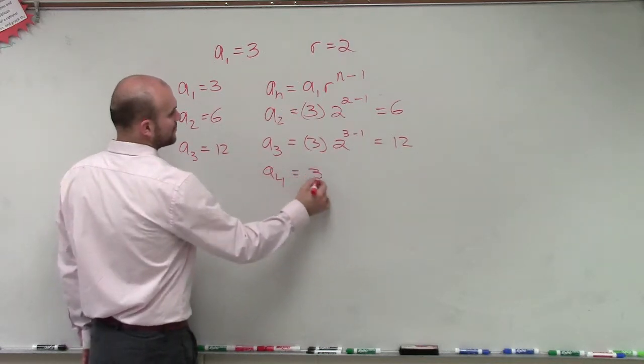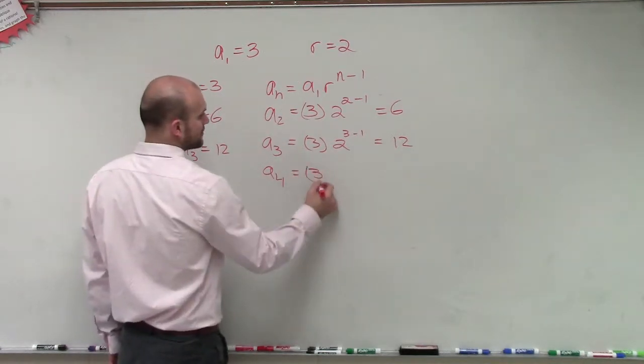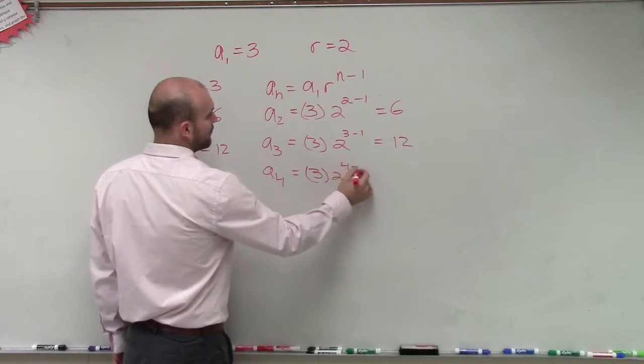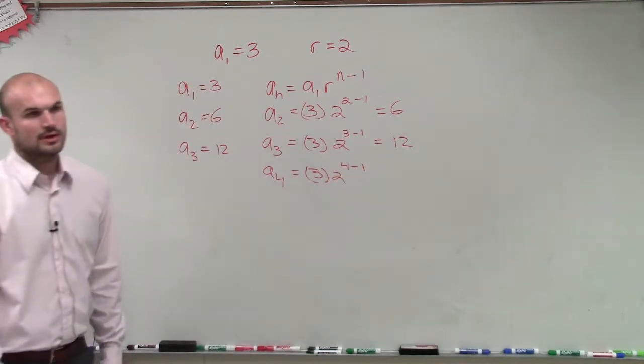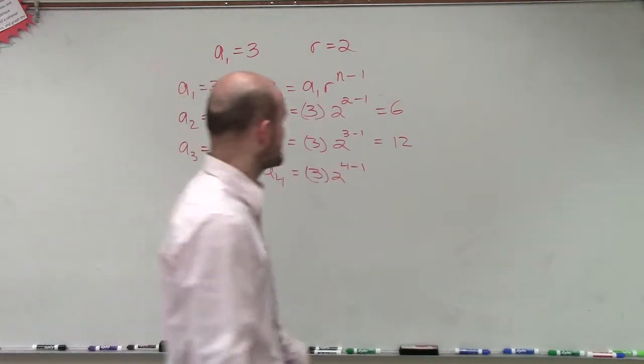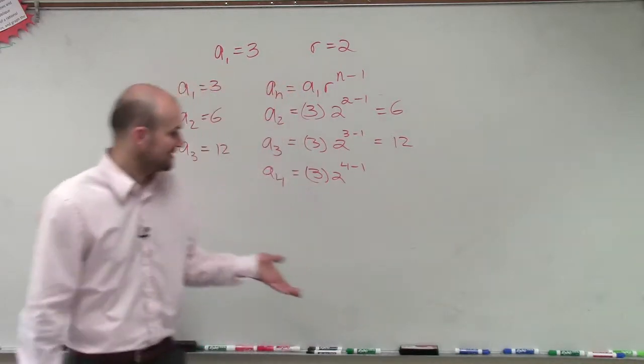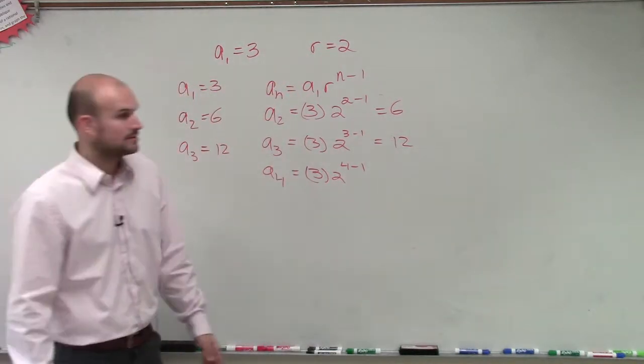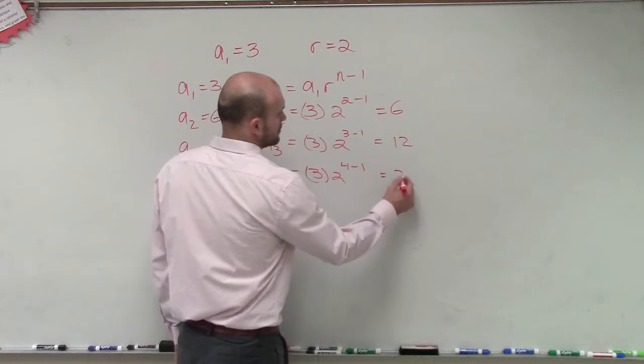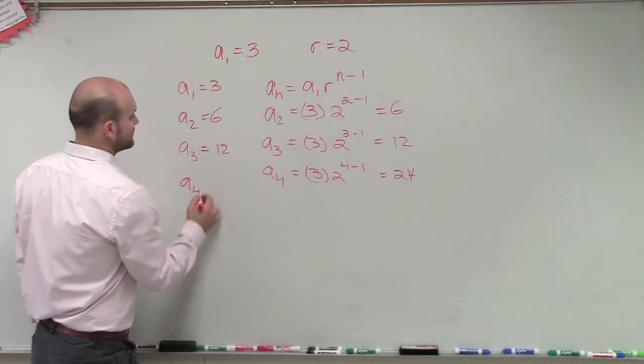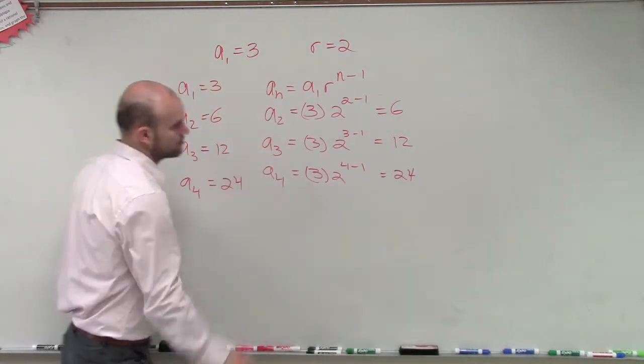a_4 now equals 3 times 2 raised to the 4 minus 1. So 4 minus 1 is 3. 2 cubed is 8. 8 times 3 is 24. Therefore, a_4 equals 24.